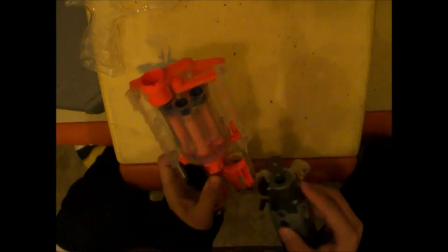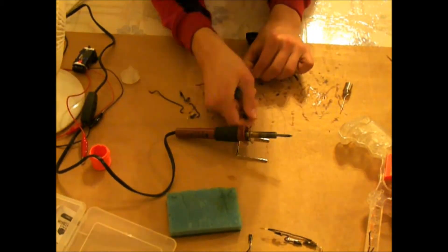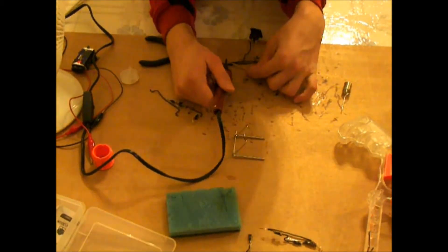Now you need to Dremel out your Maverick to accommodate the wires and LEDs. And then you need to solder them all together.